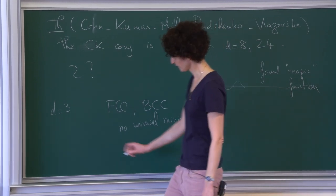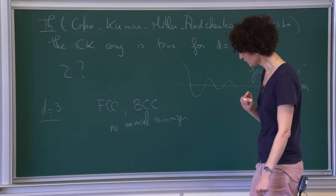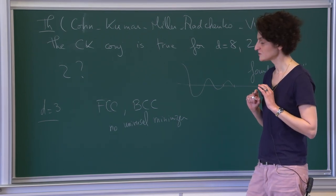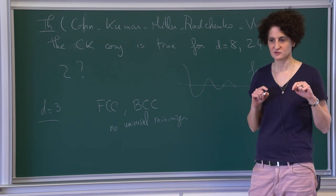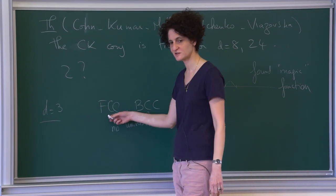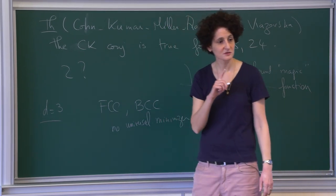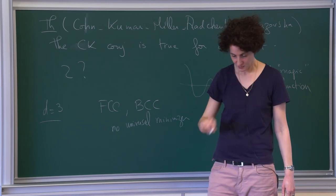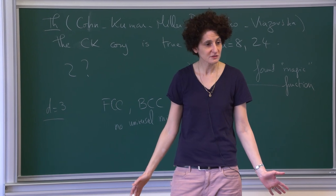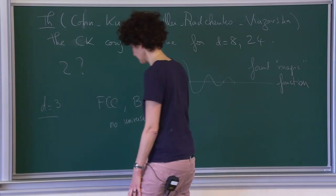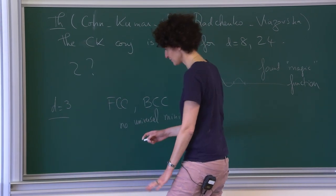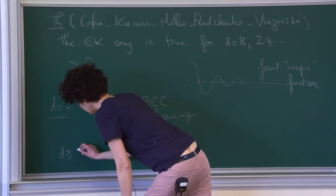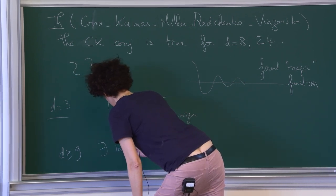We don't even know that a minimizer is necessarily a lattice — and it's not always true. For d large enough (around 9 or 10), there are minimizers which are not lattices, even for the best packing problem. People in theoretical computer science are very interested in best packing in very large dimensions because in coding theory you want to pack spheres in very large spaces — so large d is not just a mathematician's game.